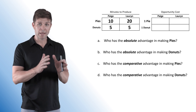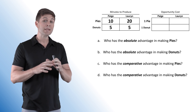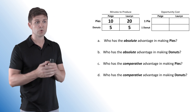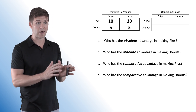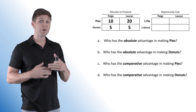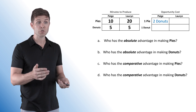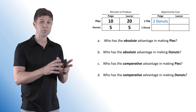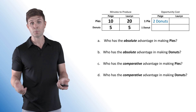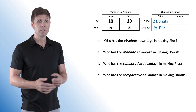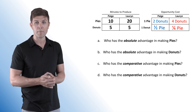The second example looks at Paige and Lauren and their bakery businesses — they produce pies and donuts. This is an input question: we're given the minutes to produce each product. For Paige, the opportunity cost of one pie is two donuts (10 divided by 5), and one donut costs her half a pie. Lauren's opportunity cost for one pie is four donuts, and one donut costs her one-quarter of a pie.